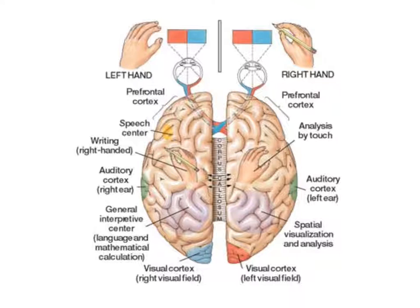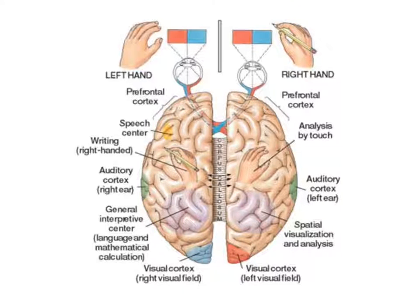For speech, it's in the left hemisphere. For senses — vision, for instance — some of them are crisscrossed.